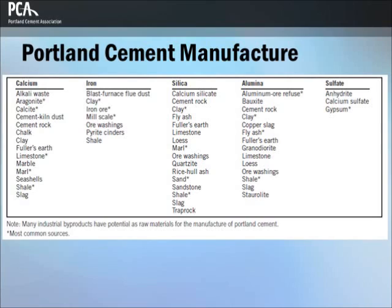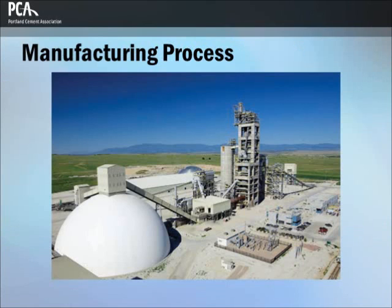Portland cement is manufactured by combining precise proportions of raw materials. This table lists the predominant sources of raw materials used in the manufacture of Portland cement. This image shows an aerial view of a cement plant.